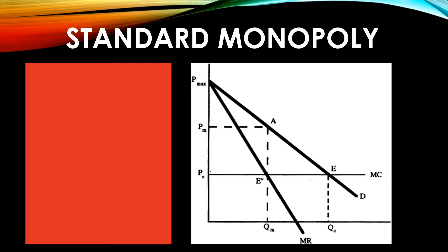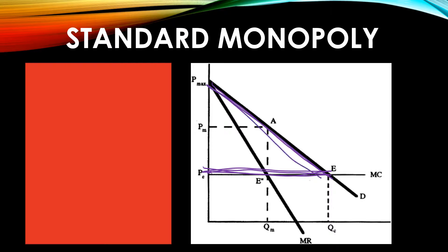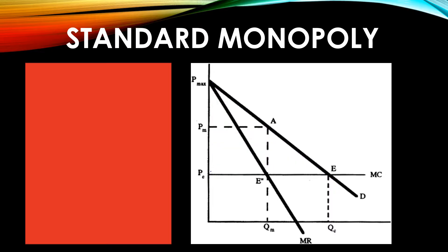This is different from the competitive situation, where marginal cost — representing the supply curve — crosses the demand curve. There we would be out at the competitive quantity QC and competitive price PC, yielding greater total surplus by serving more consumers. In the monopoly case, we stop the market at QM, up to point A on the demand curve, so the area of consumption between QM and QC does not happen — those transactions do not take place.